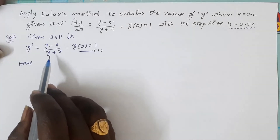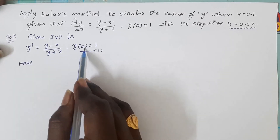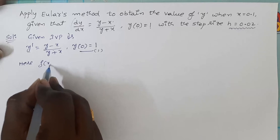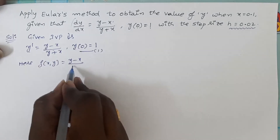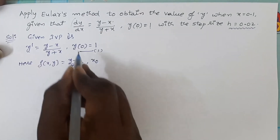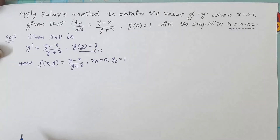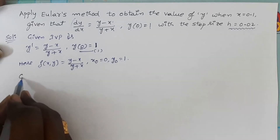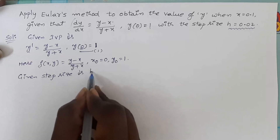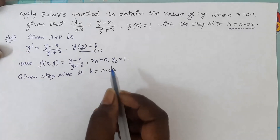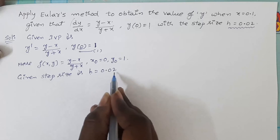Here, compare the given initial value problem with the general form y′ = f(x, y), y(x₀) = y₀. So f(x, y) = (y − x)/(y + x), x₀ = 0, and y₀ = 1. The given step size is h = 0.02. In this problem we have to find the value of y at x = 0.1, so with step size h = 0.02 we will need five steps to reach x = 0.1.